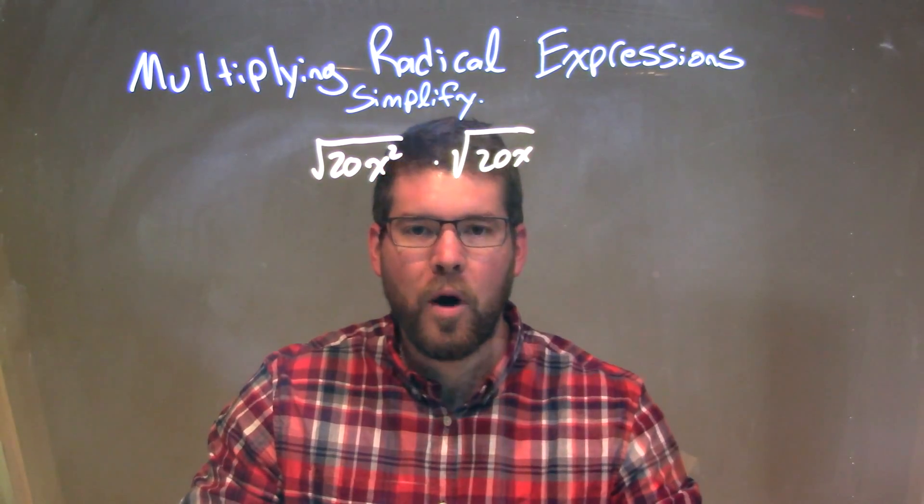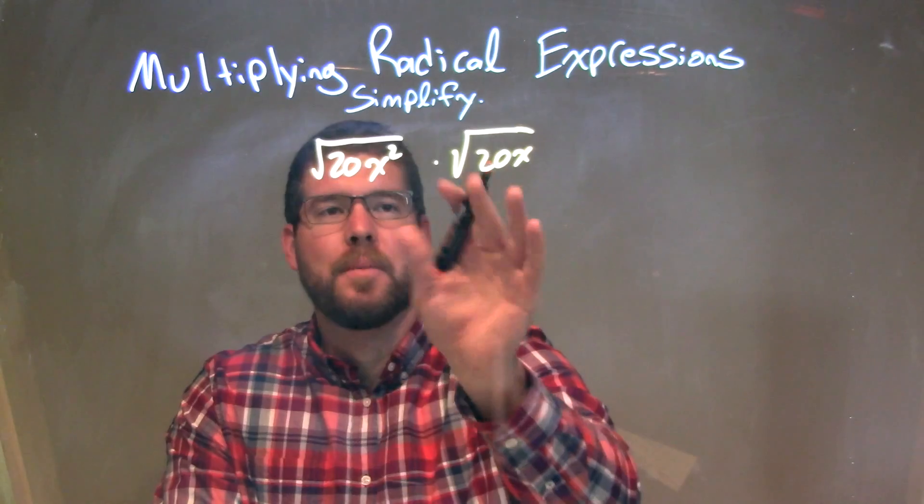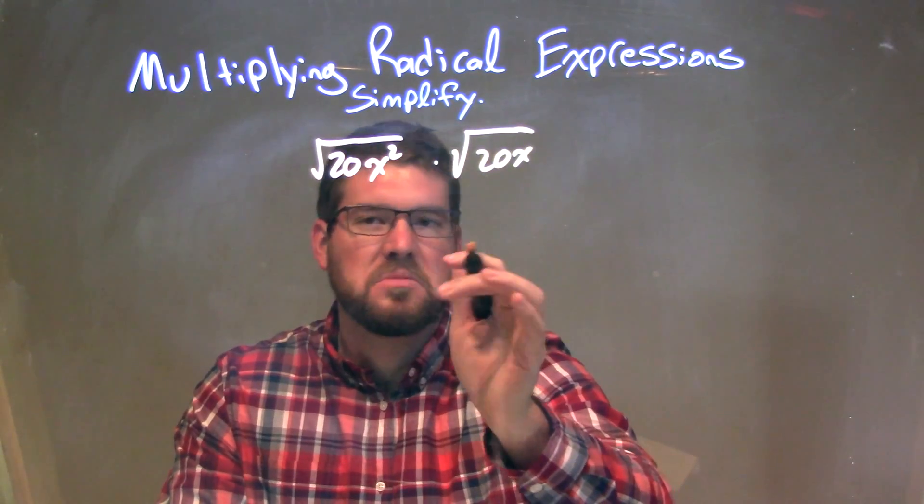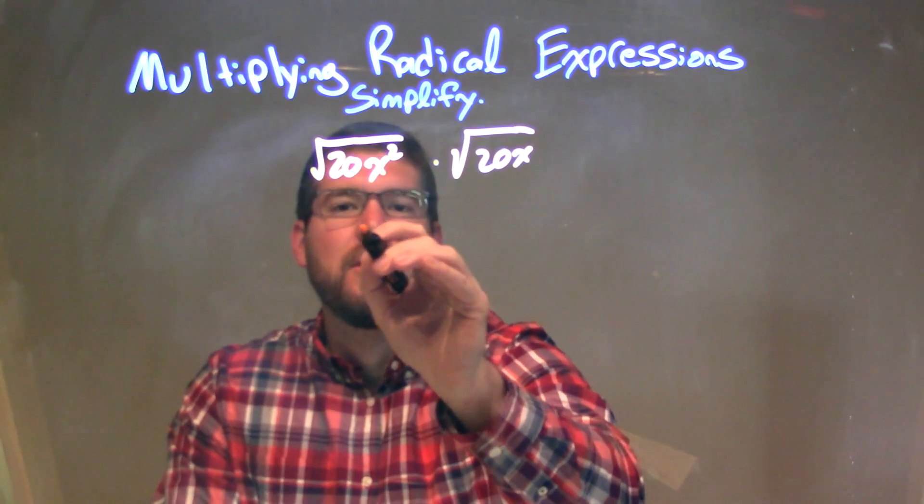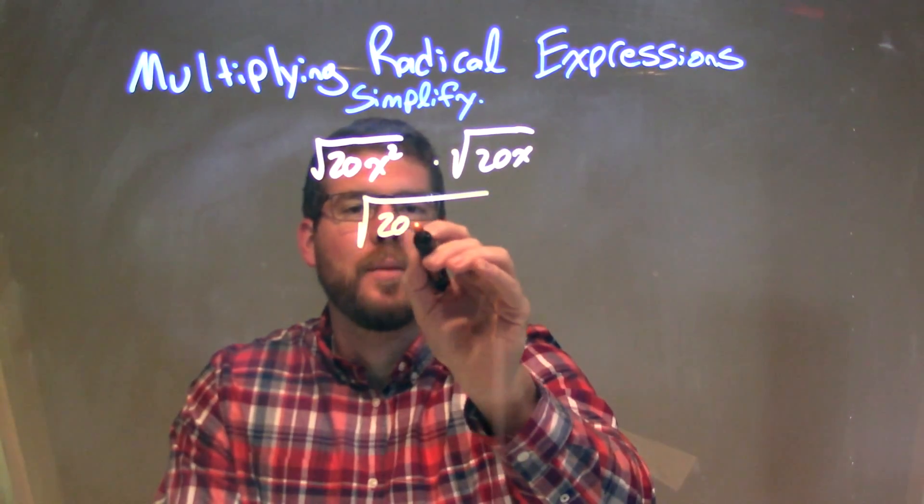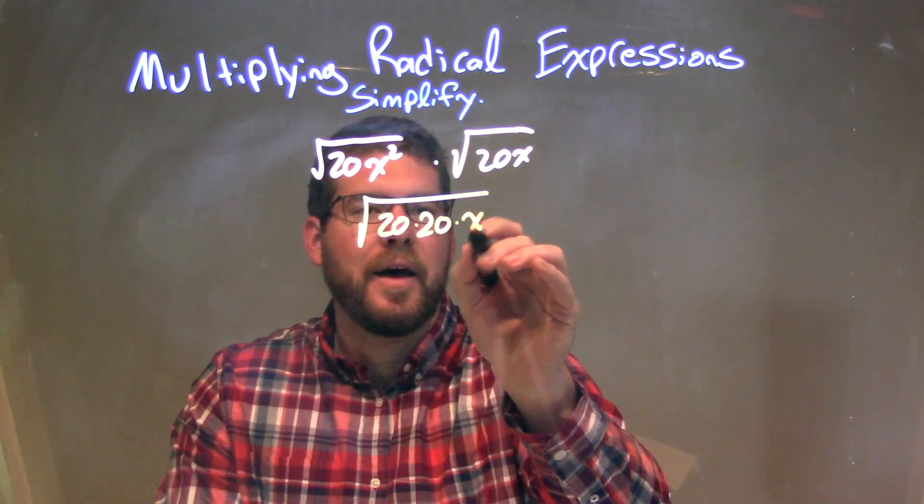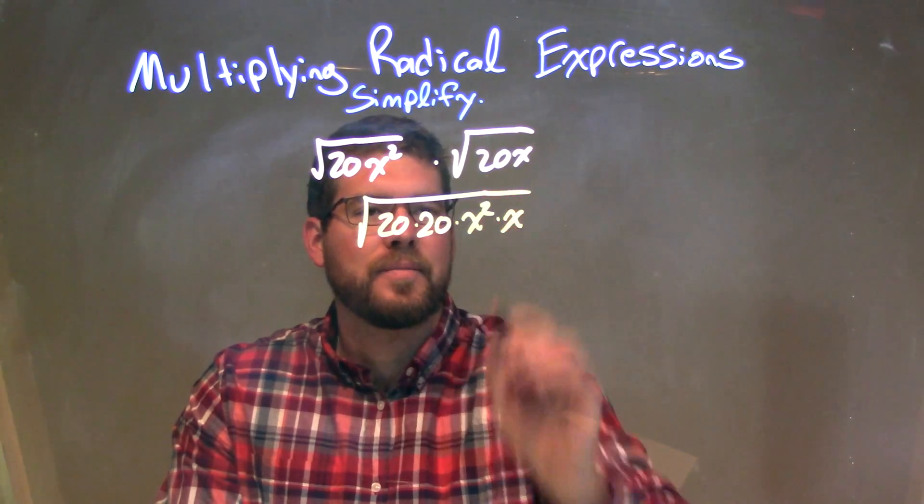Well, we can combine this under one big square root, which I'm going to do. I'm going to rearrange putting my like terms next to each other, or my numbers next to each other, my x's next to each other. So, the square root here of 20 times 20 times x squared times x, okay?